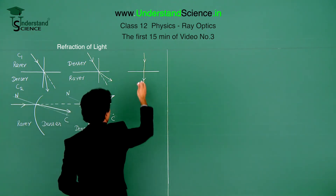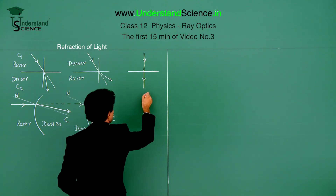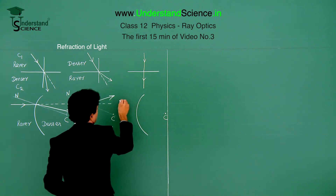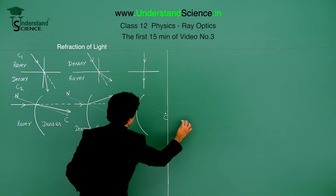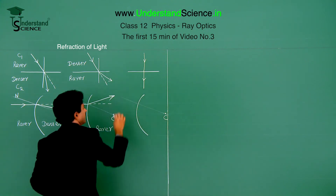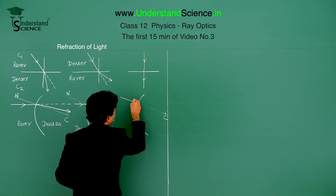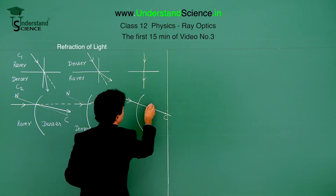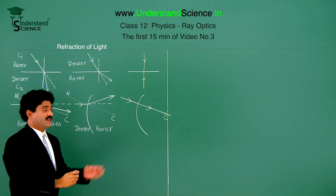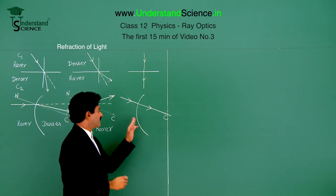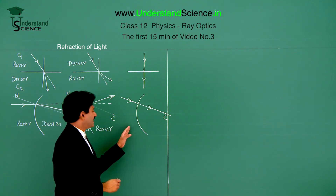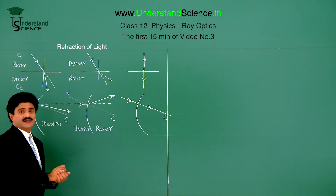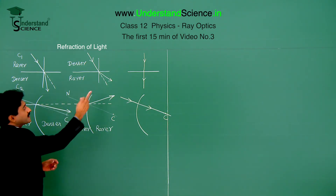When the light ray is along the normal — this being the centre of curvature — if the light ray comes along that line, which is the normal, then it goes undeviated. Whether rarer to denser or denser to rarer, this is how it will be. So, for even a curved surface, we know how to draw refraction, which is similar to the flat surface case.